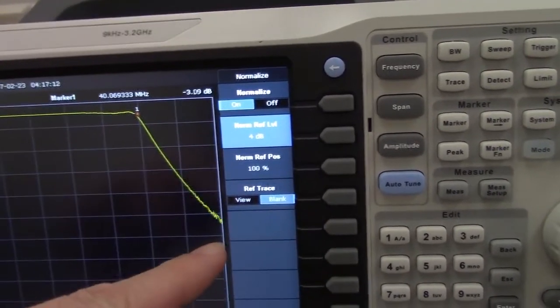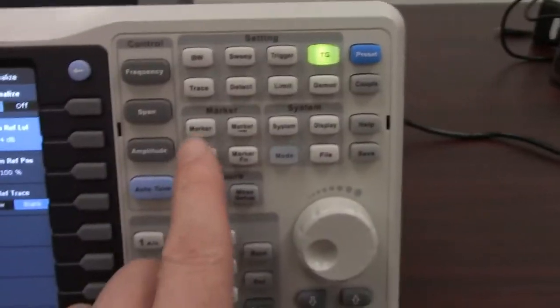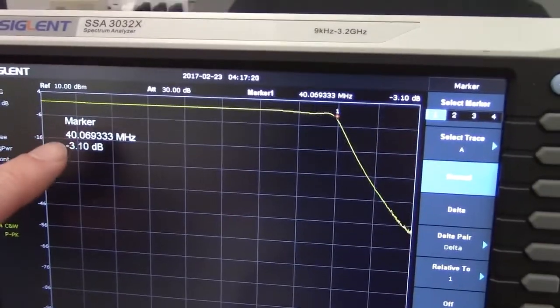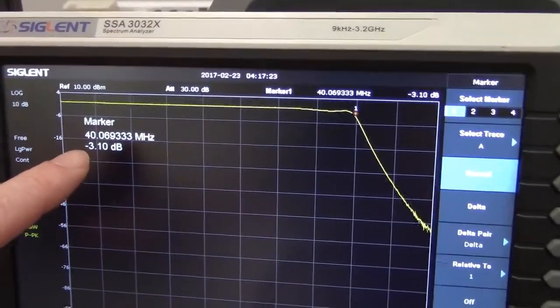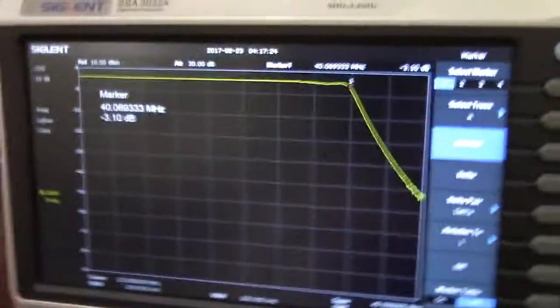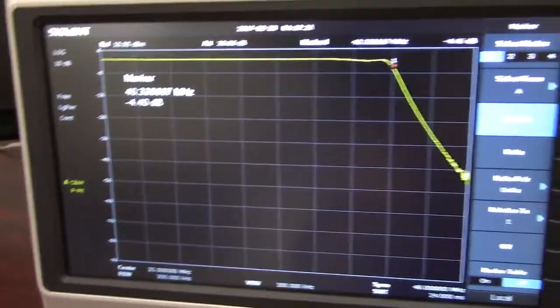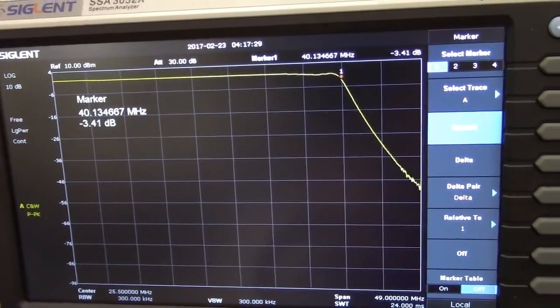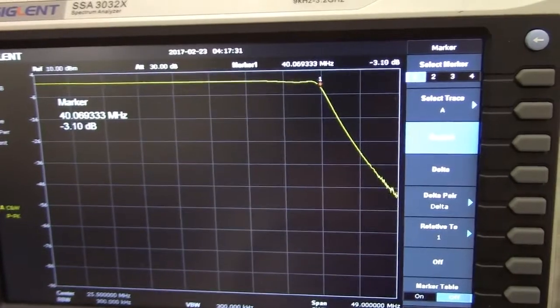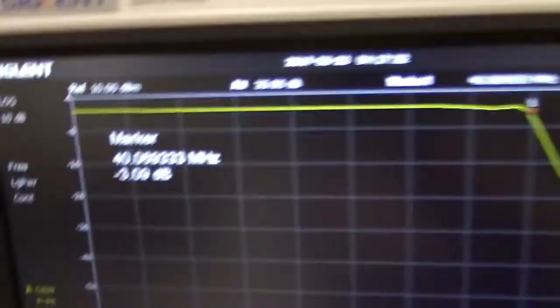So, above this particular frequency, we're starting to lose amplitude. And so, I can go over here to the marker function. Marker is going to provide us with a frequency and the power readout at that particular point. And so, we can just adjust the marker position. And so, if we want to find a 3 dB point, that's going to be around 40 MHz.